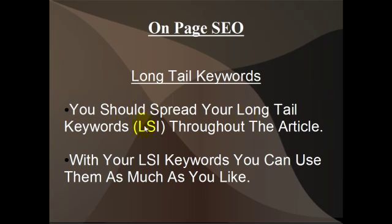Long tail keywords: you should spread your long tail keywords and your LSI throughout the article. When you select your main keyword for your site, you should also select 5 or 10 long tail keywords that Google, Yahoo, and Bing would associate with your main keyword, and then just spread those throughout the article. For the LSI keywords, you can use them as much as you like — don't go overboard and keyword stuff it — but if you've got 10 long tail keywords, I suggest you use all of them at least twice throughout the article.